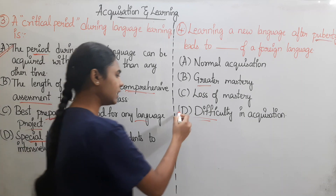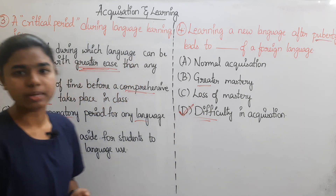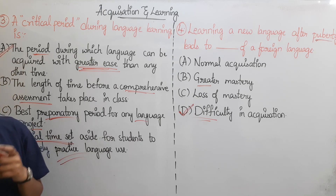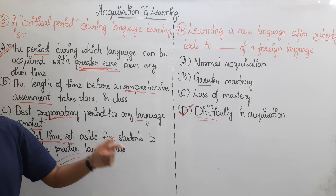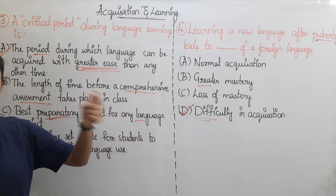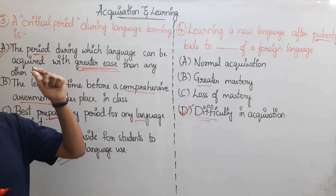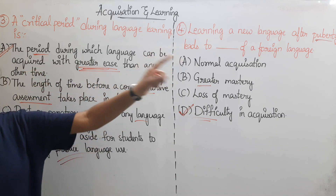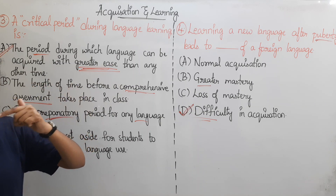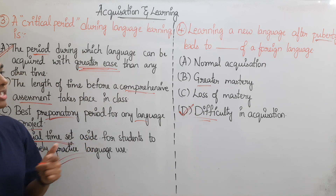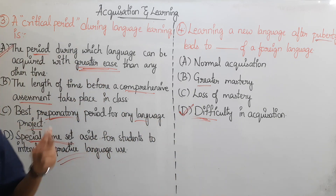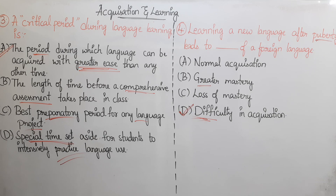The correct answer is Option D — Difficulty in acquisition. When you are young, at the early childhood stage, you are able to acquire any other languages. Once you reach a certain age, after puberty and adolescence, after 19 years, if you try to acquire a new language, you will have problems and difficulties. So the correct answer is Option D.